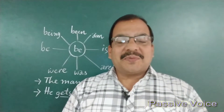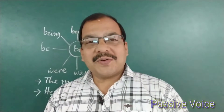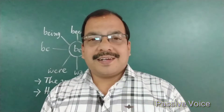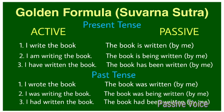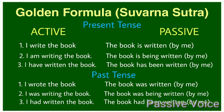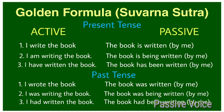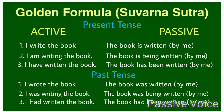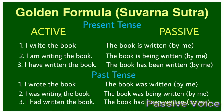Now let's move to the golden formula — the Subana Sutras — for changing active voice to passive voice. Present simple: 'I write the book' → 'The book is written by me.' 'I write two books' → 'Two books are written by me.' 'I play cricket' → 'Cricket is played by me.' Past simple: 'I wrote the book' → 'The book was written by me.' We will also cover present progressive, present perfect, and other tenses.